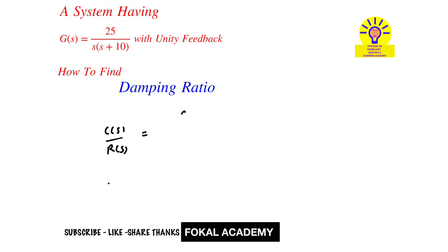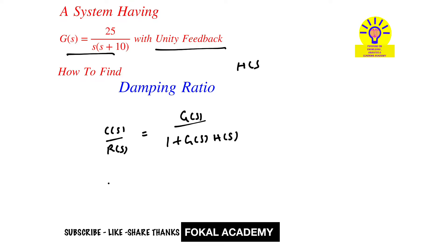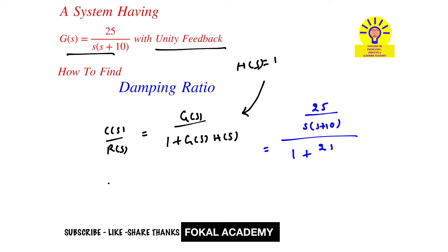The closed-loop transfer function is C(s)/R(s) = G(s) / [1 + G(s)·H(s)]. Since H(s) = 1 for unit feedback, substituting gives: [25 / (s(s + 10))] / [1 + 25 / (s(s + 10)) · 1].